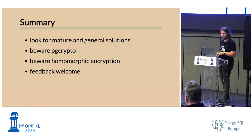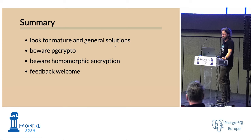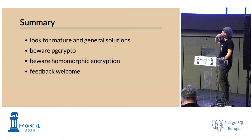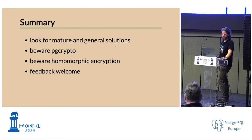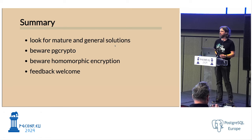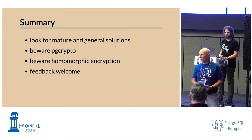I said I would leave with more questions than answers. Advice for now: look for things that are mature, general, and clear. Don't believe hype from third-party products without proper evaluation. PG Crypto is almost always the wrong solution. Homomorphic encryption is dubious. I welcome feedback on your use cases so we can collate them and hopefully arrive at an easier solution in the future. That's all for me, thank you very much.